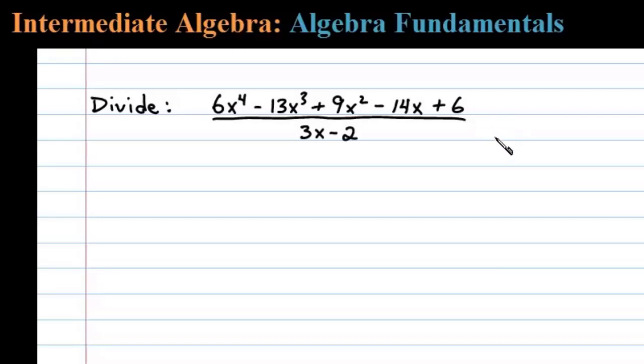Here we're asked to divide two polynomials. To do that we'll use polynomial long division. We begin by deciding what factor times 3x will be equal to 6x to the fourth.